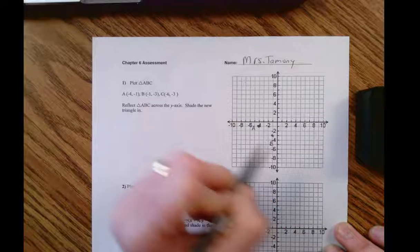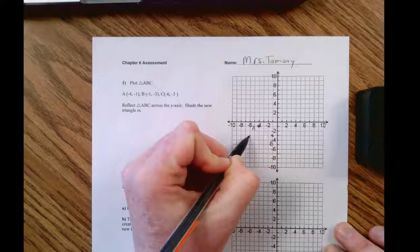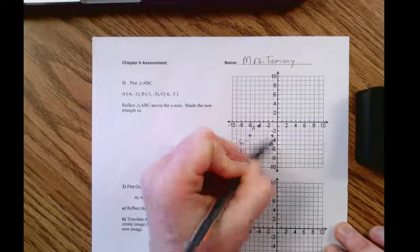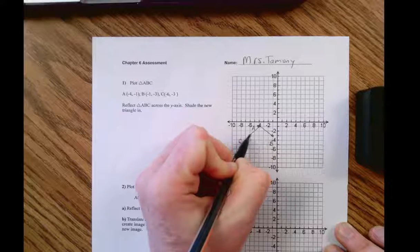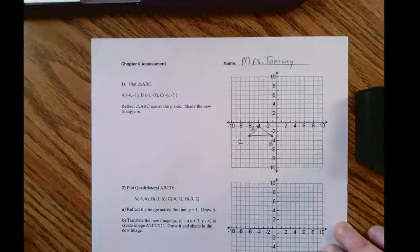And C is negative six, negative three. There's my triangle. Okay, so that's that part.